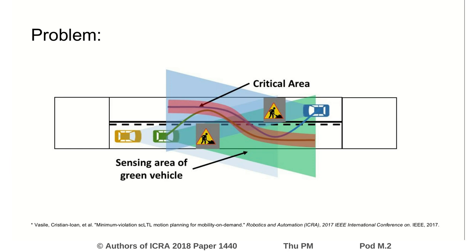In this case we have three vehicles: yellow, green, and blue. The yellow and green vehicle want to arrive in the rightmost intersection, and the blue vehicle wants to arrive in the leftmost intersection. They have to avoid the construction zones illustrated by the signs.